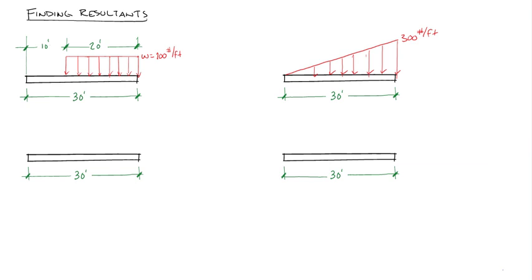On the left, we have a beam that has a partially distributed load over 20 feet of the beam. And on the right, we have a linearly increasing load, like a snow drift, over an entire beam.